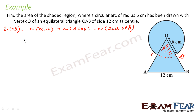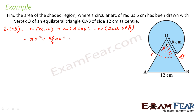Area of the circle is pi r squared. Plus area of triangle OEB, that is root 3 by 4 into side squared. Minus area of sector — this angle is 60 degrees because this is an equilateral triangle. So it will be 60 by 360 into pi r squared.